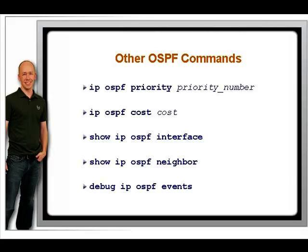The Debug IP OSPF Events command is helpful to troubleshoot why routers are not forming a neighbor relationship with each other. Similar to EIGRP, OSPF routers form neighbor relationships before exchanging any routing information. Several items must line up for a neighbor adjacency to be established.